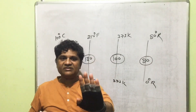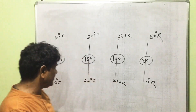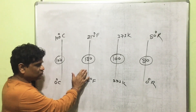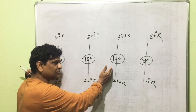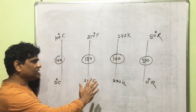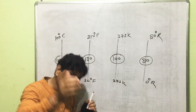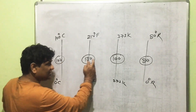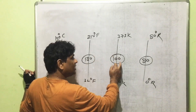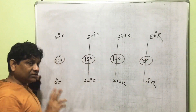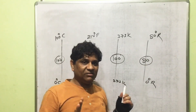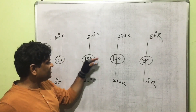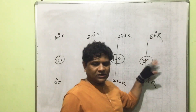All thermometers have the same length. Suppose each thermometer has a length of 5 cm — then in the same length, 100 divisions on the centigrade scale equals 180 divisions on the Fahrenheit scale, which equals 100 divisions on the Kelvin scale, which equals 80 divisions on the Réaumur scale. So in the same length: 100°C = 180°F = 100 K = 80°R.